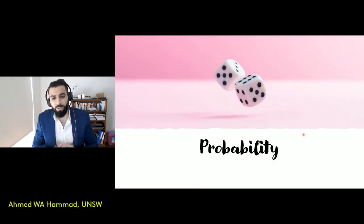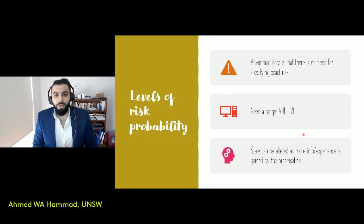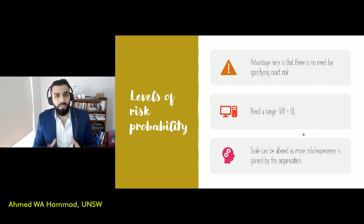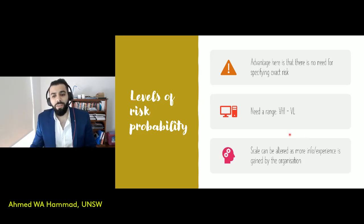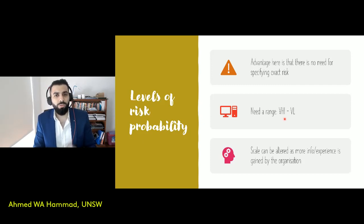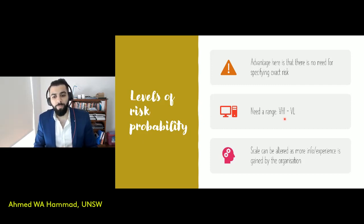Let's look at how probabilities are defined in this risk matrix. An advantage is that there's no need to specify an exact level of risk — it's bounds. If your probability falls within the bounds, that's what we're interested in. You can classify the range from very high to very low, dividing the scale into five steps: very high, high, moderate, low, and very low.